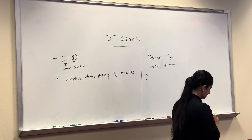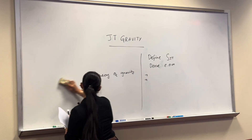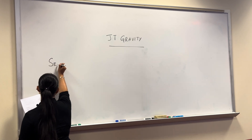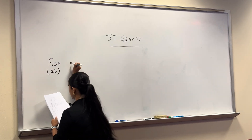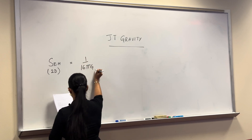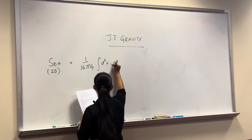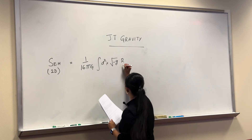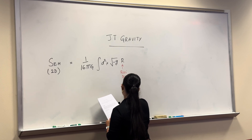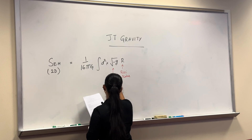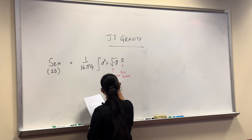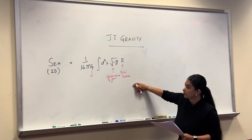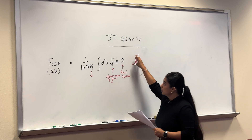Let's start with the action. The Einstein-Hilbert action in two dimensions is given by an integral involving the Ricci scalar R and the determinant of the metric g, with a gravitational constant. This expression for the Einstein-Hilbert action in two dimensions is topological.